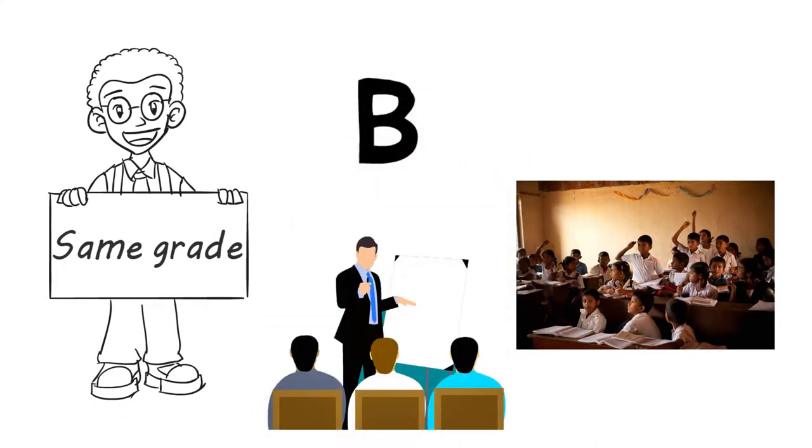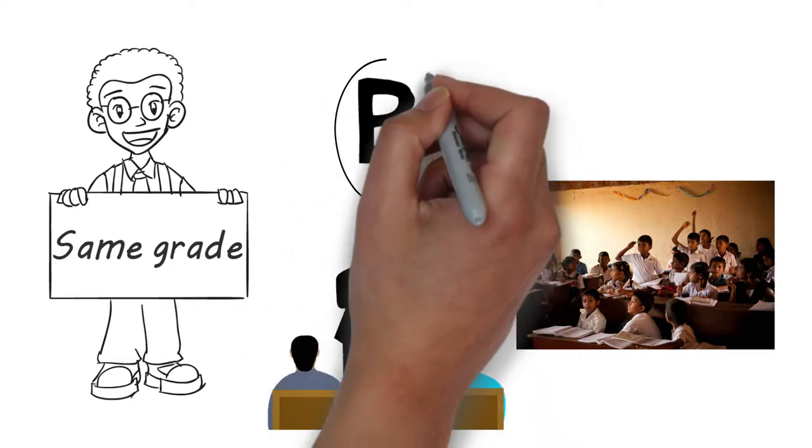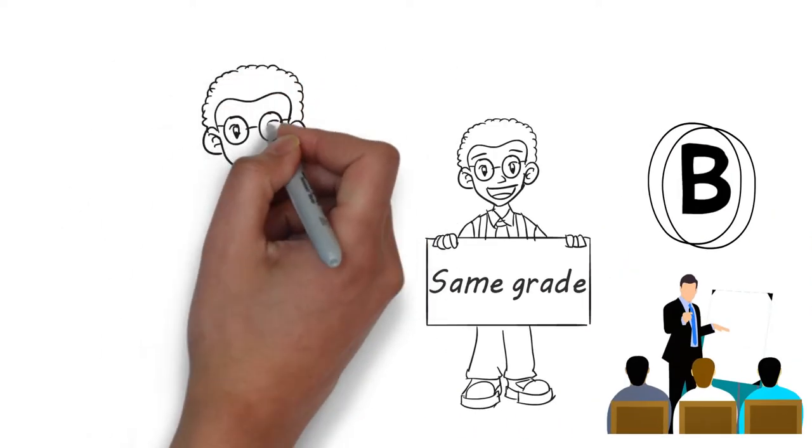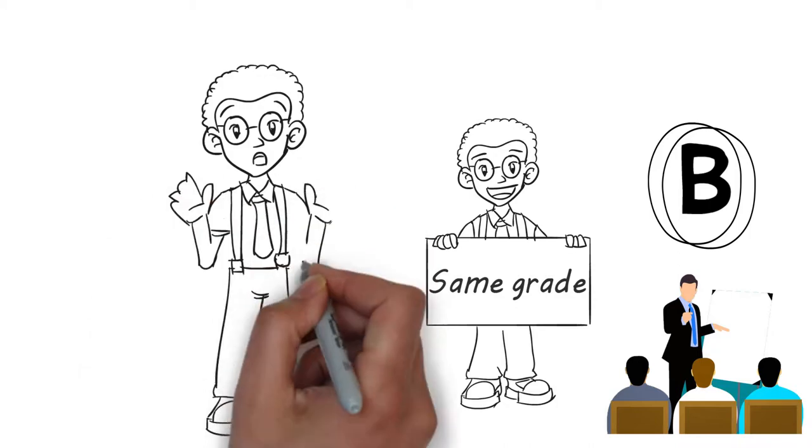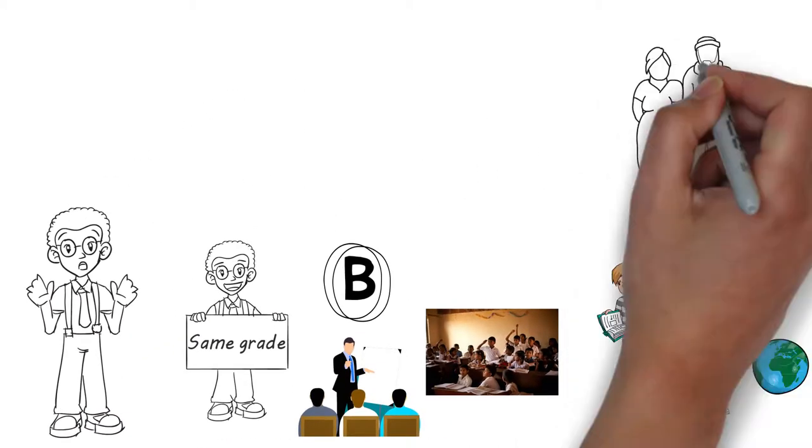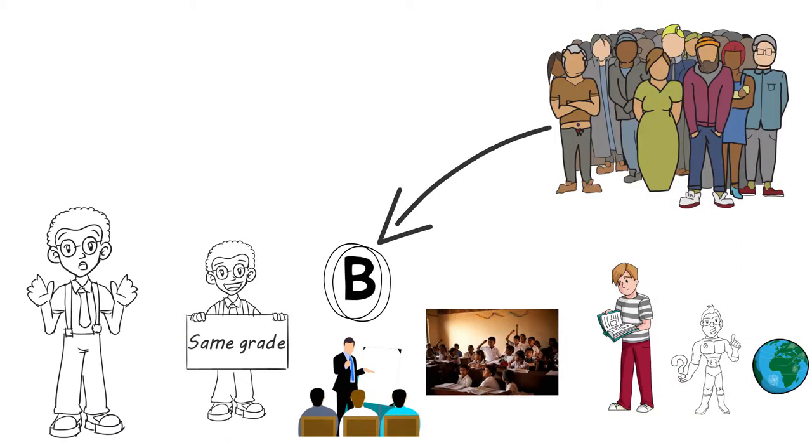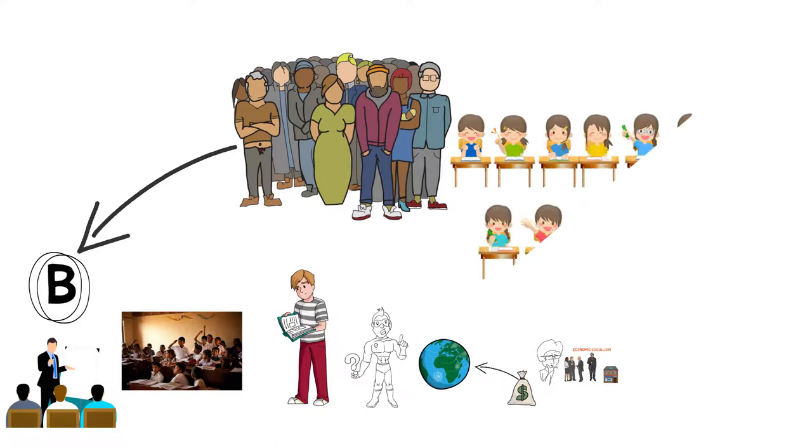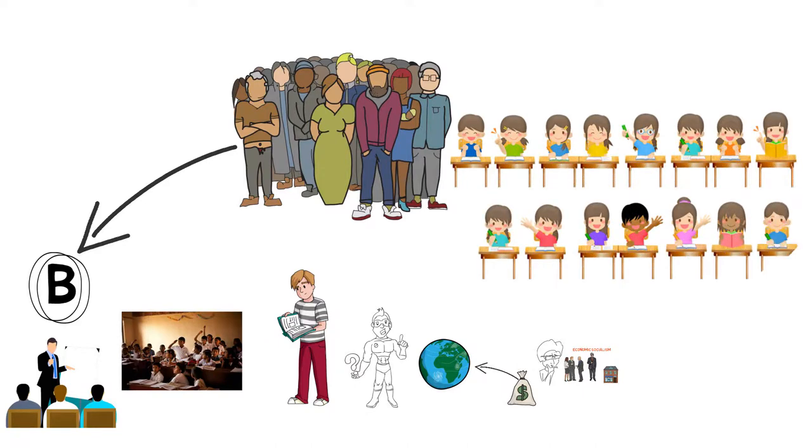The students were delighted at the proposition. The toppers didn't mind getting a B while the flunkers were overjoyed at finally being able to pass. After the first test everyone got a B and it looked like the plan was working. Intraclass divisions were wiped out, everyone was equal and without any significant damage to anybody else.